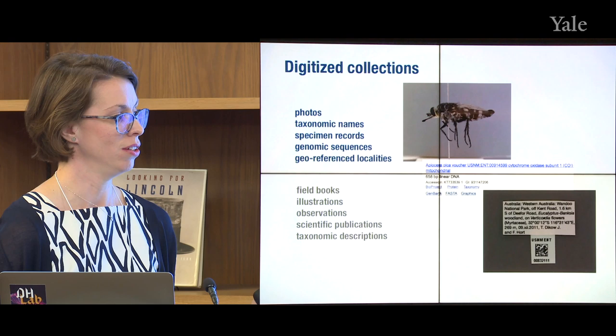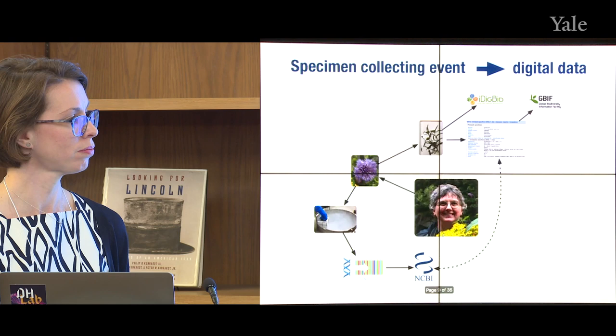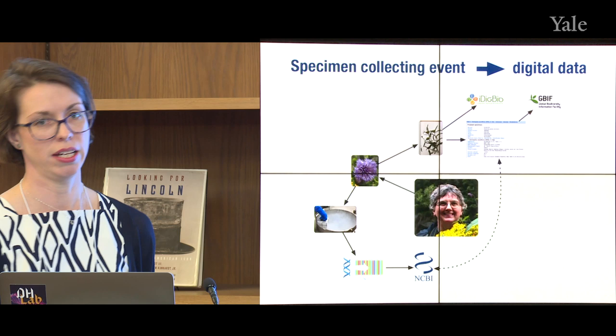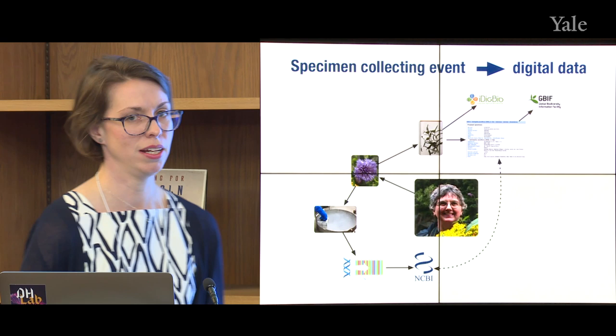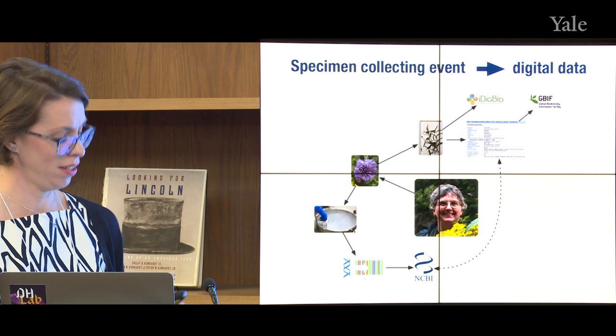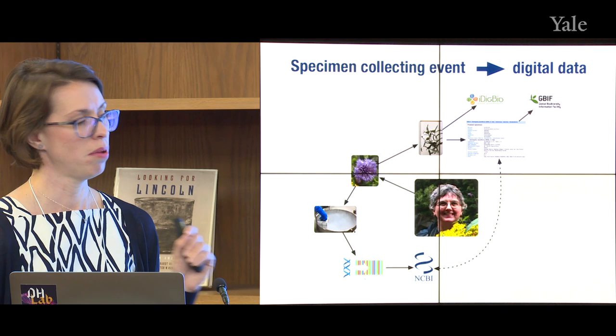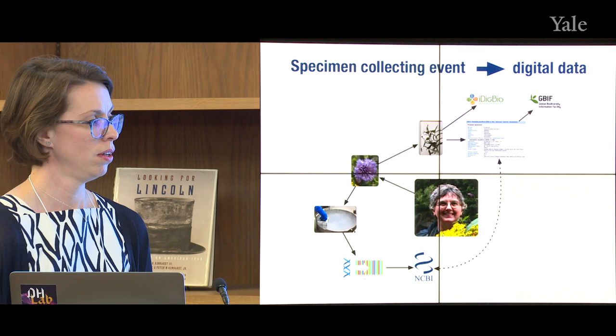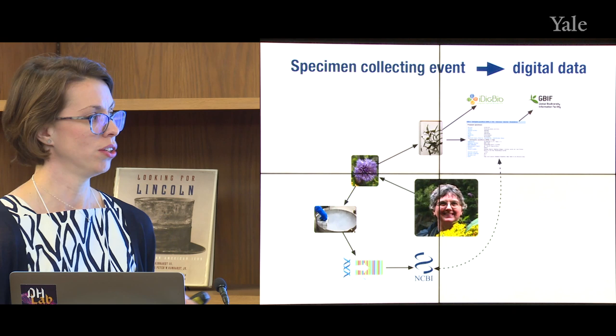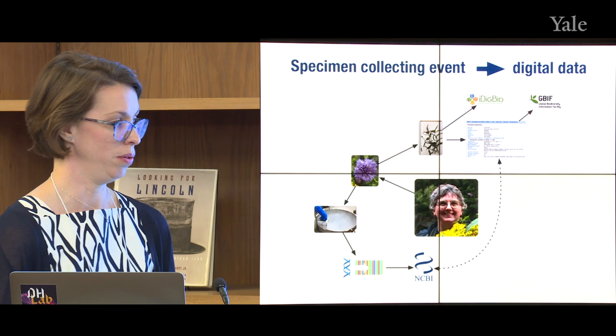This is an example of what a specimen collecting event looks like in terms of where the data go. In the center is Vicki Funk, a curator of botany and a great collaborator. She went out to collect a purple flower — the species is called Centropogon passiflorus. We decided to sequence this genome because it's part of the sunflower family tree that has no genome around it. She actually collected the seeds, and we grew it in a greenhouse because we needed a lot of DNA for the kind of sequencing we were doing. From the actual specimen, most of the plant gets pressed.